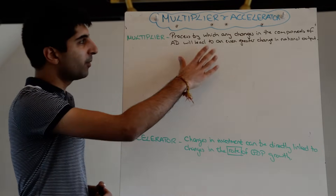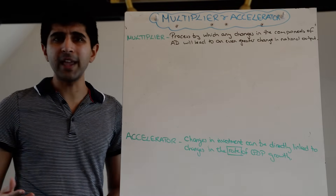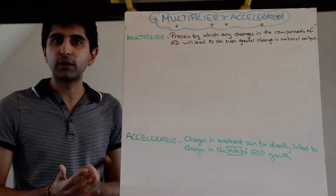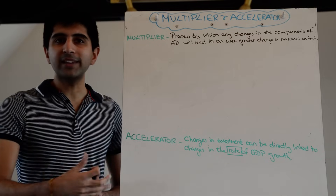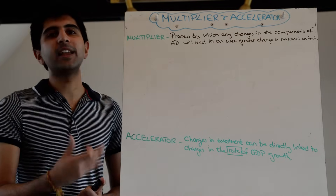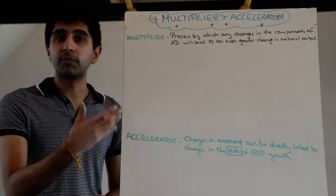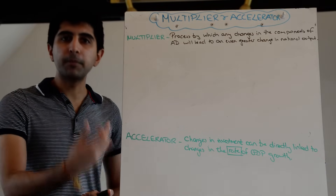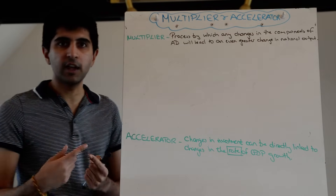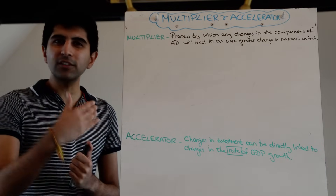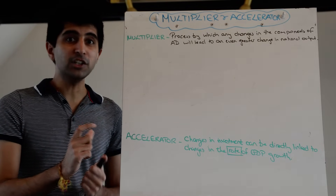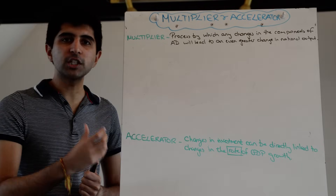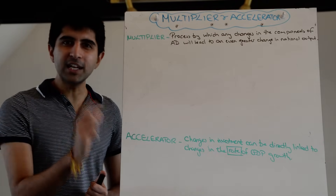Now how does that happen? Very simply, what the multiplier is saying is that any increase in spending — by aggregate demand going up for whatever reason — will create income for somebody else, which will then facilitate spending by those people, which will create income for somebody else, which will facilitate further spending, which will create more income and more spending. You get into this virtuous cycle. And the end effect is that AD doesn't just shift to the right because of that initial amount of spending, but it keeps shifting to the right before settling on a much greater change in national output than the initial increase in spending.